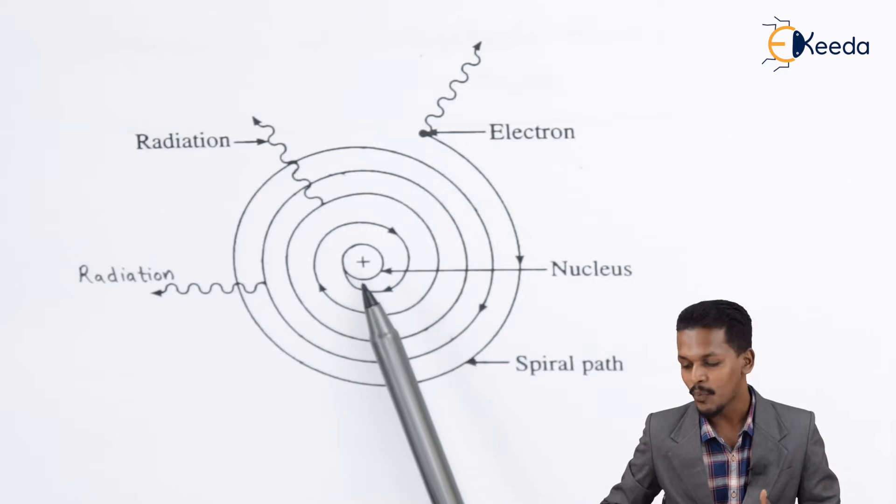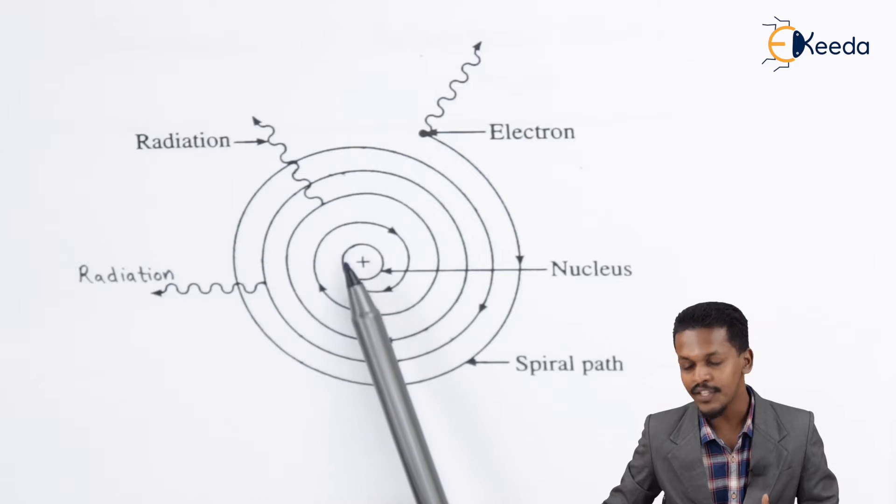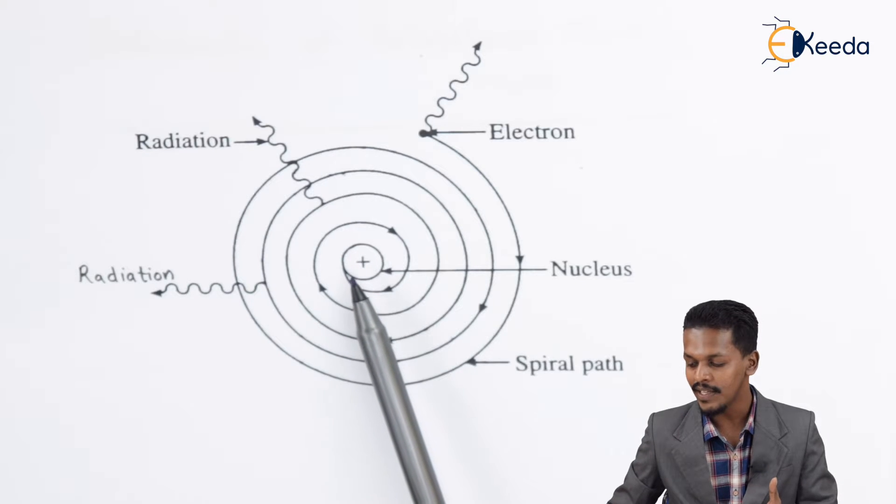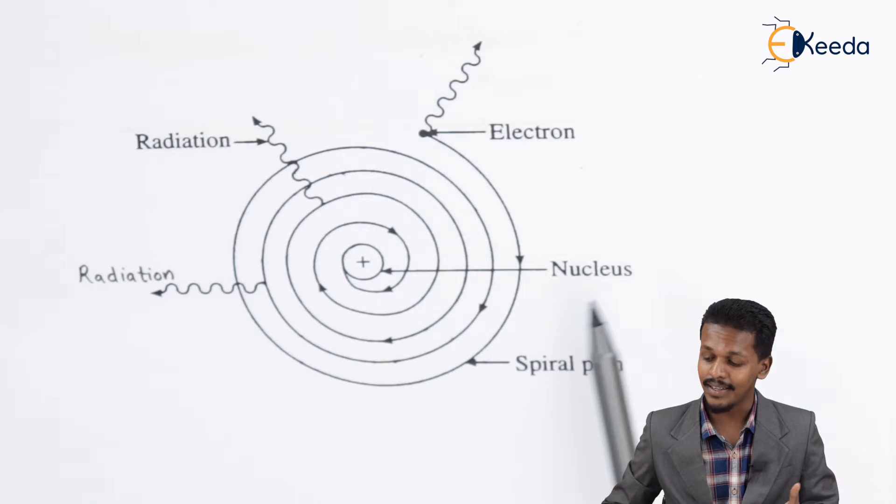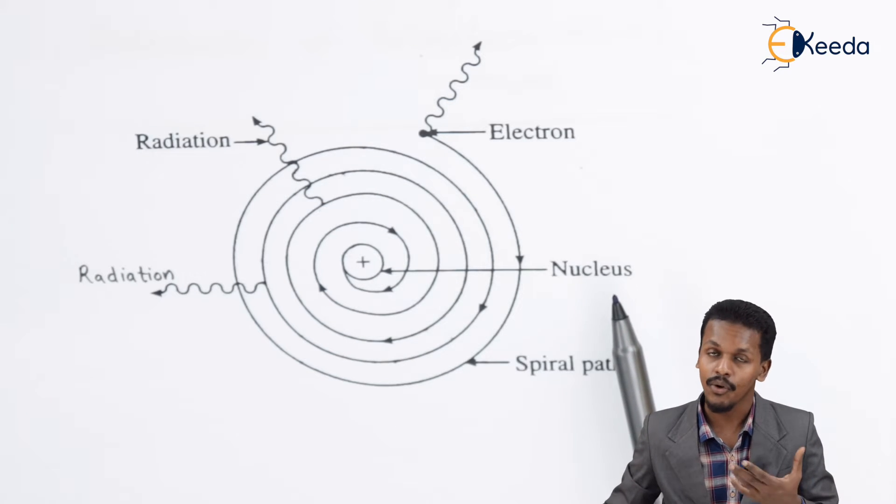Once it emits radiation, the energy will be less and it will come back to the proton and fall on this nucleus. That is how the electron gets attached to this proton. But in actual practice, this theory is very much wrong.